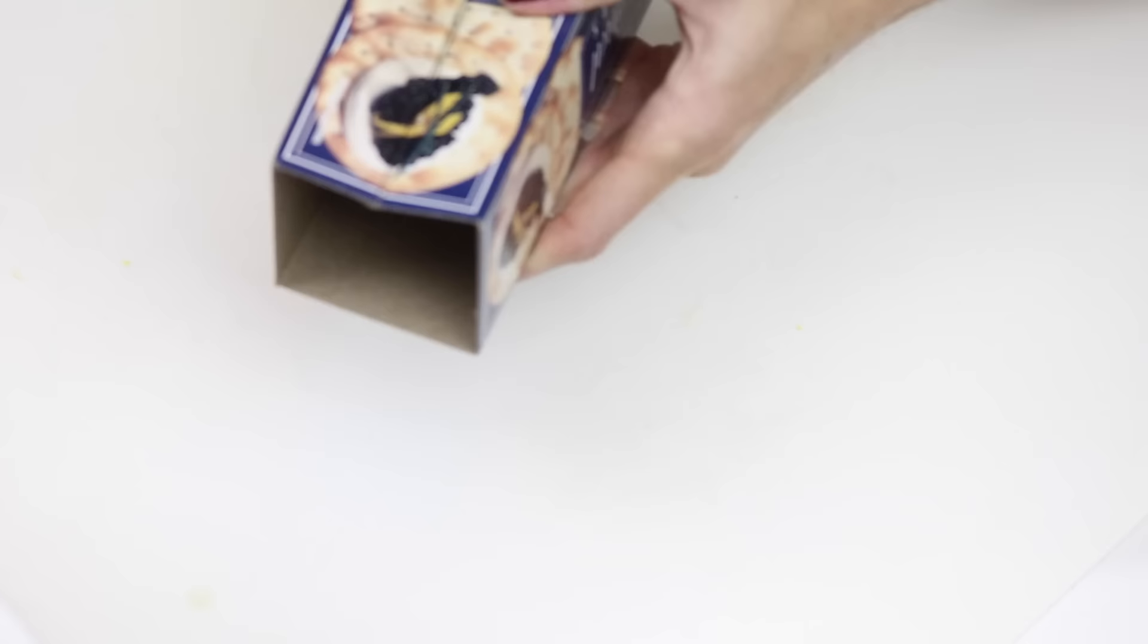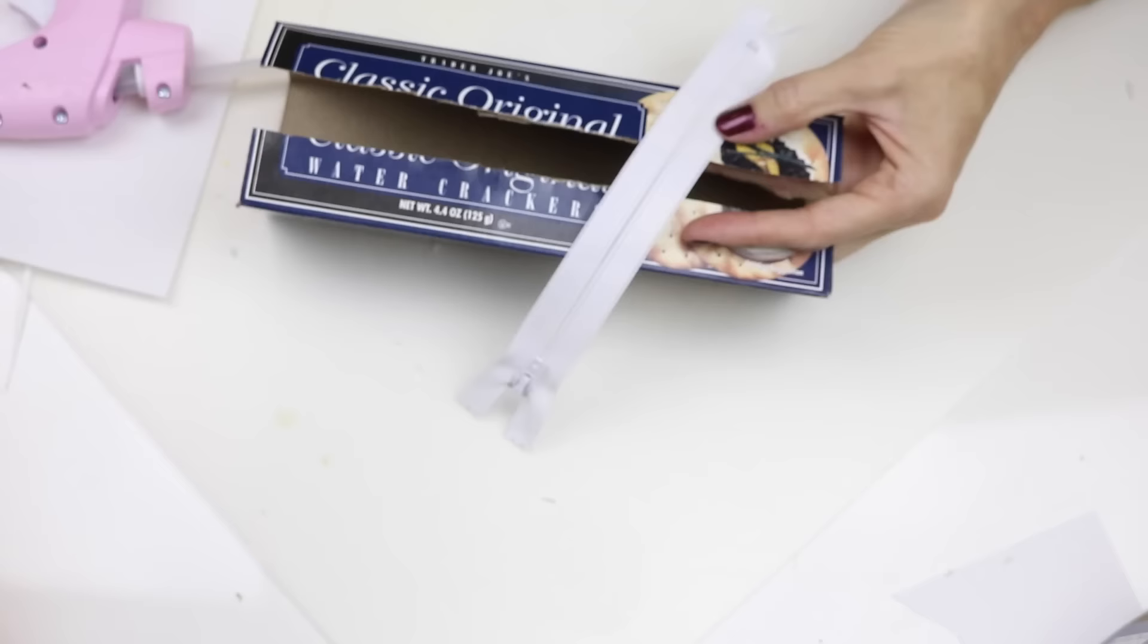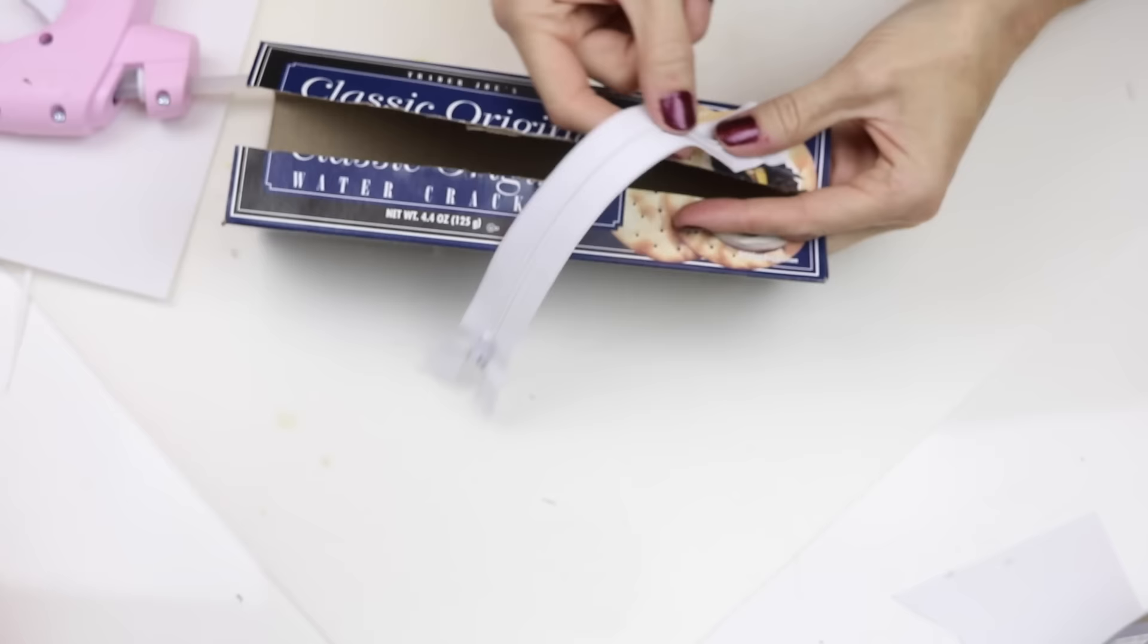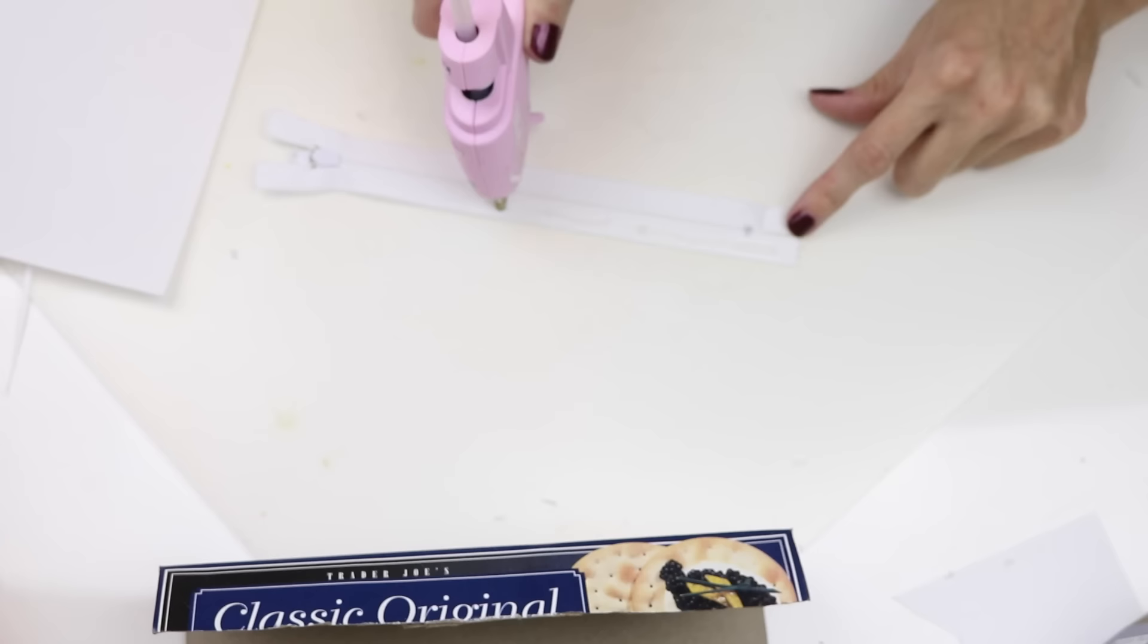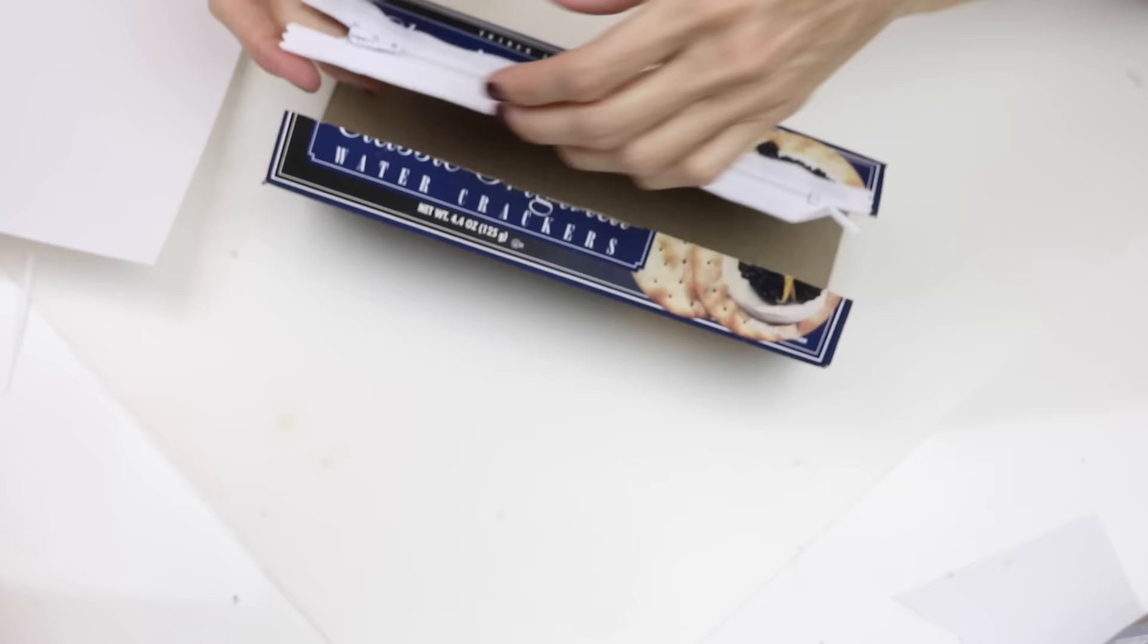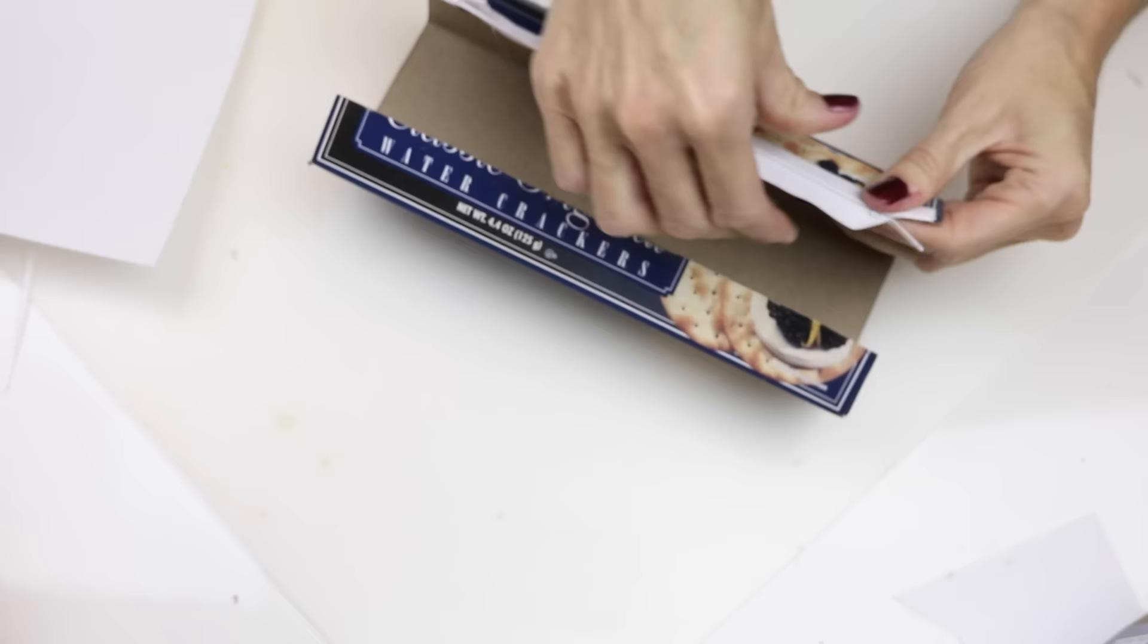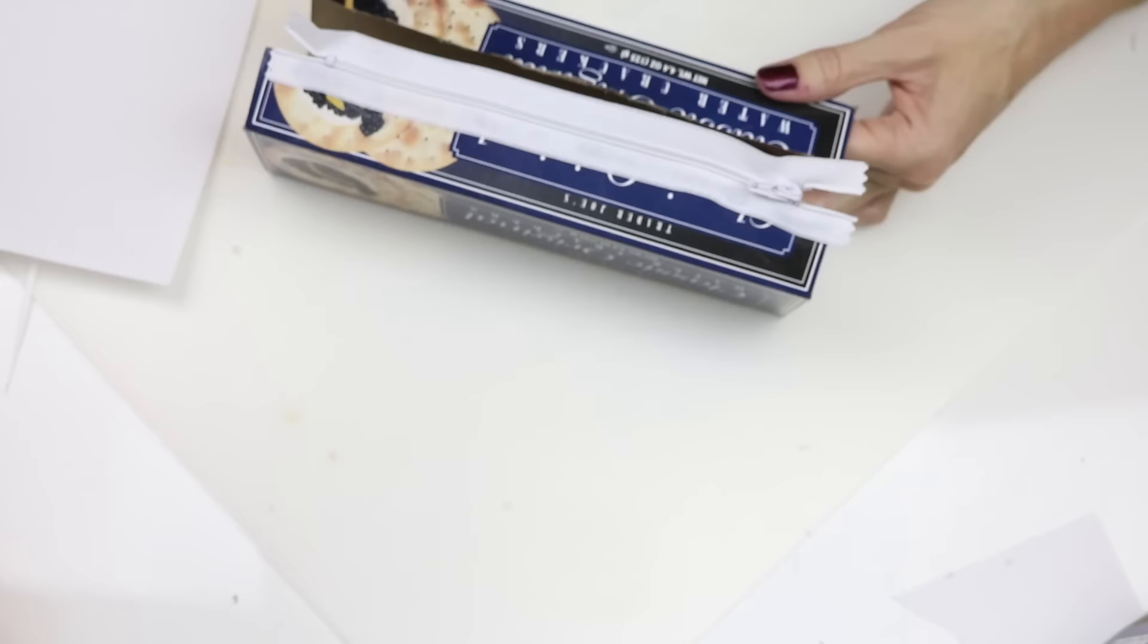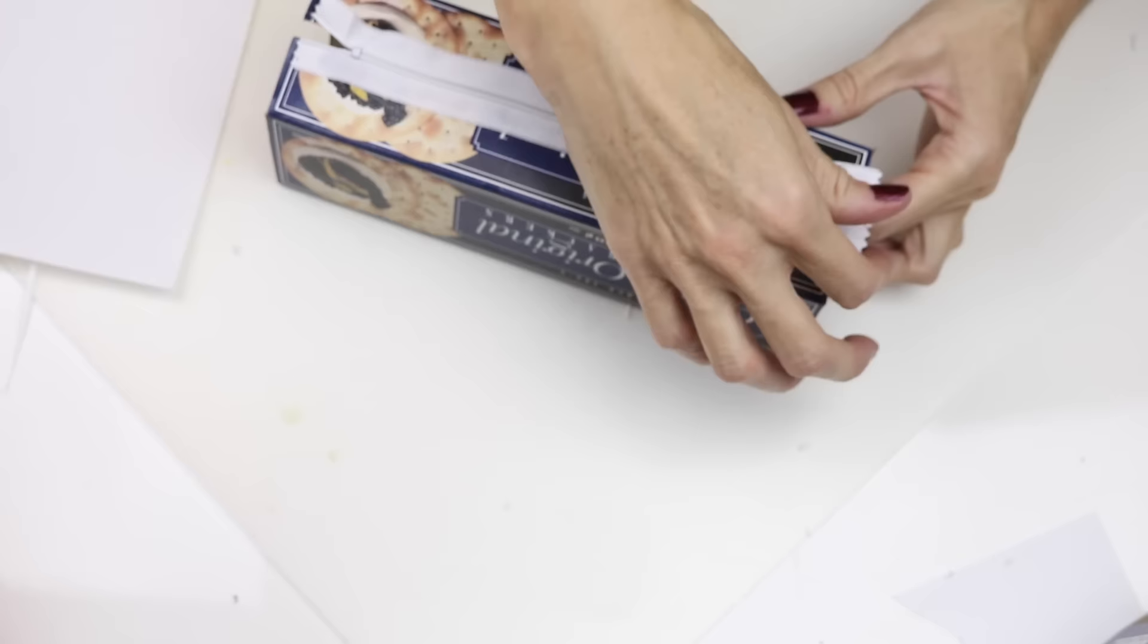Then you will need a zipper. You will just hot glue it as you see me doing here. When you have your zipper glued to the box, then you can just cut off any excess.